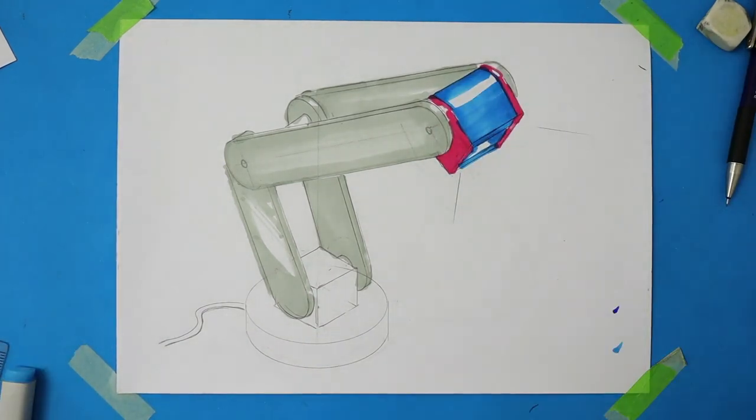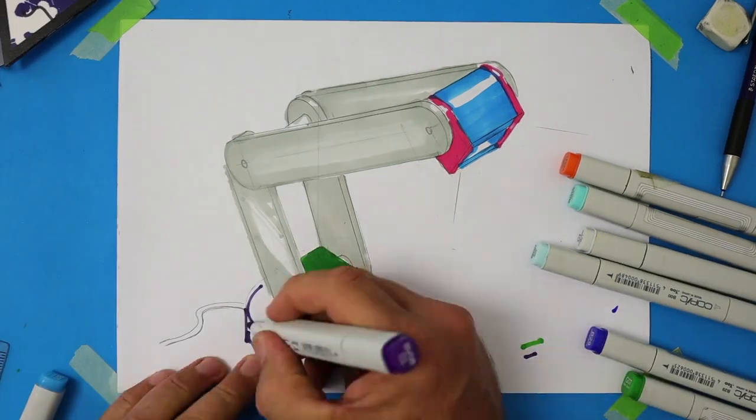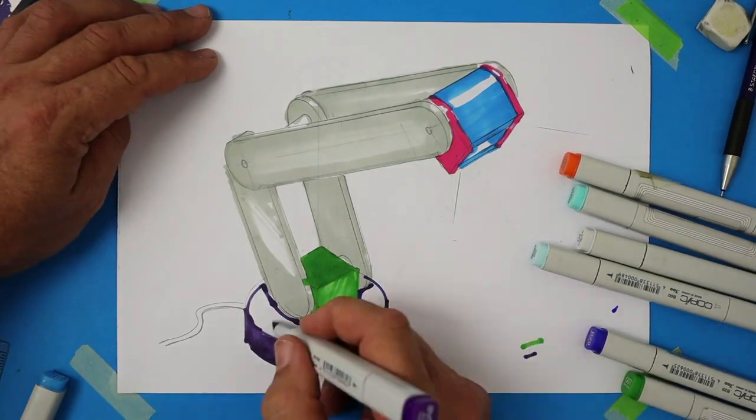So there's a little bit of fun, a few different colors just to show the different components there. I'm tidying that up by using some felt tip.